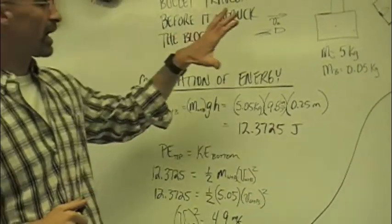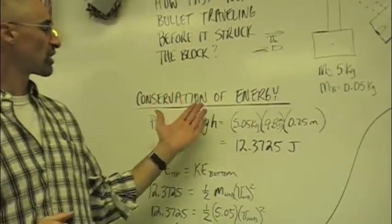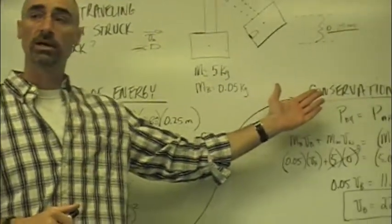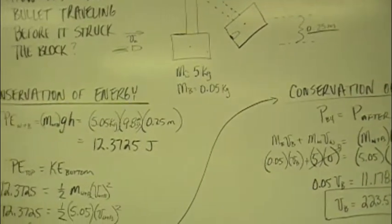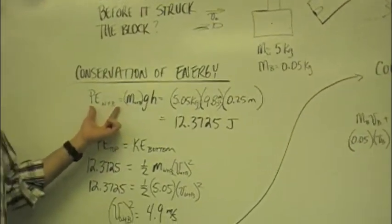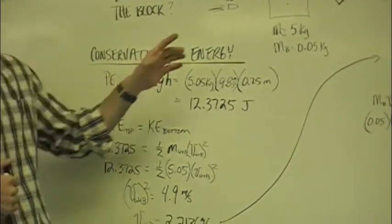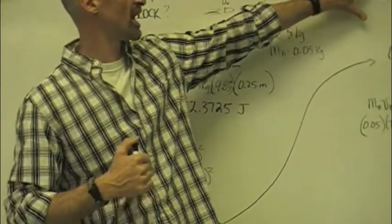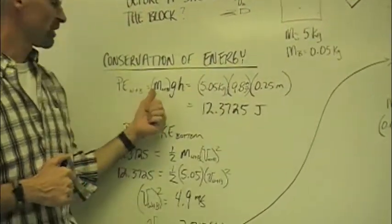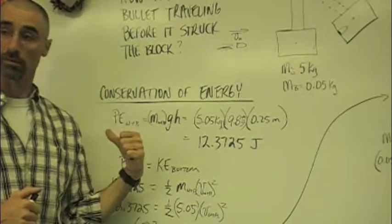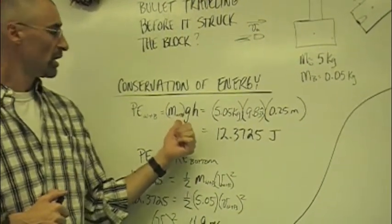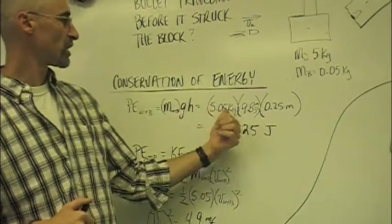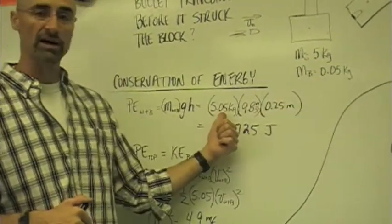If we go about this problem, it's basically using the conservation of energy and the conservation of momentum to solve a pretty cool problem. If you guys look at this, I think it'll make sense to you. The potential energy of the block and the bullet at the very top of its swing right here is going to be equal to MGH. I have to have the mass of the wood plus the bullet here just so we know they're together. So the mass of those two things together is going to be 5.05 kilograms.